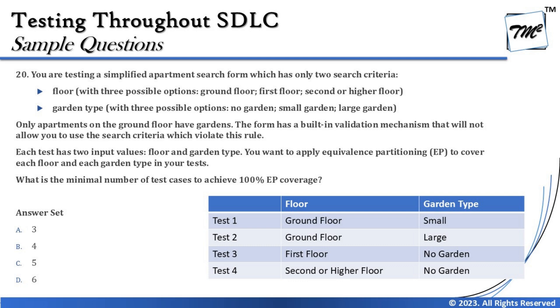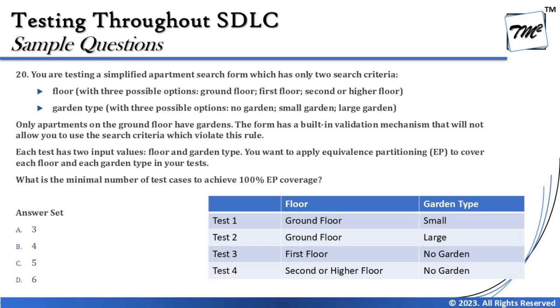The table looks like this: Test 1 — ground floor, small garden; Test 2 — ground floor, large garden; Test 3 — first floor, no garden; Test 4 — second or higher, no garden. We did not come up with all combinations because constraints reduce invalid ones. Without constraints, techniques like pairwise testing could produce nine combinations, but five of them would be invalid. The right answer is B: four test cases.